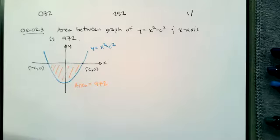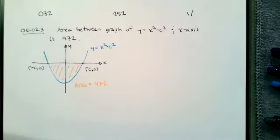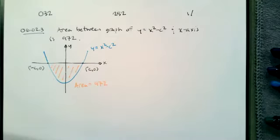I'm going to start with problem three on chapter six, section two. We're told that the area between the graph of y equals x squared minus c squared and the x-axis is 972, and we're asked to find the exact value of c. It works out to an integer. We also want the positive value of c.